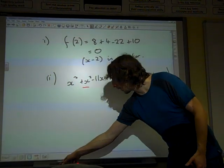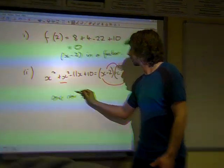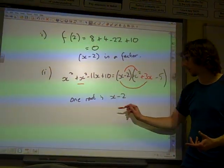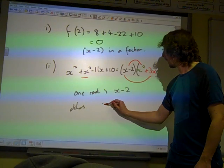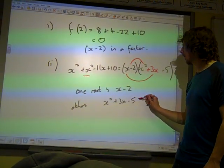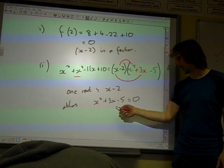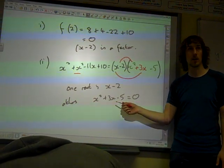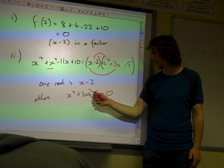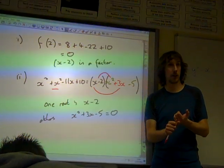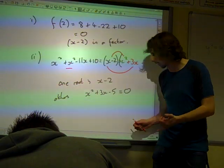So we've got x minus 2 times x squared plus 3x minus 5. So one of the roots we know now is x equals 2. The other roots, well they are when x squared plus 3x minus 5 equals 0. And we're now seeing that factor theorem root wouldn't have been a good idea, because this doesn't factorize, does it? There are no two integers that times to give 5 and add to give plus 3. So if we've got a quadratic that doesn't factorize, what other options have we got?